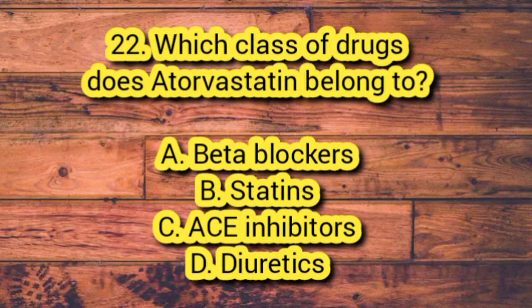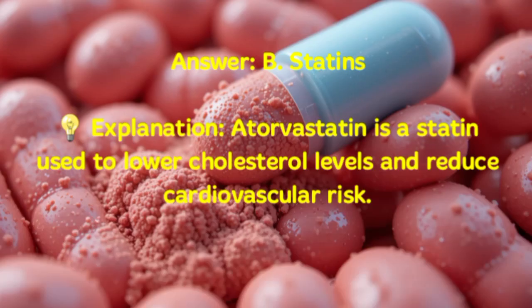Number 22. Which class of drugs does atorvastatin belong to? A. Beta blockers. B. Statins. C. ACE inhibitors. D. Diuretics. Answer: B. Statins. Explanation: Atorvastatin is a statin used to lower cholesterol levels and reduce cardiovascular risk.